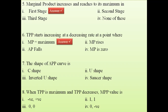The sixth question: TPP starts increasing at a decreasing rate at a point where MPP is maximum. Up to the inflection point, TPP increases at an increasing rate; after the inflection point, TPP increases but at a decreasing rate. The inflection point is the point where MPP is maximum.